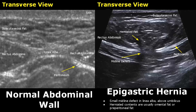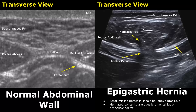Over here we have an epigastric hernia. There is a small midline defect in the linea alba right here, above the umbilicus. We can see herniated fat protruding through this defect. Usually omental fat or pre-peritoneal fat is the herniated content in an epigastric hernia.